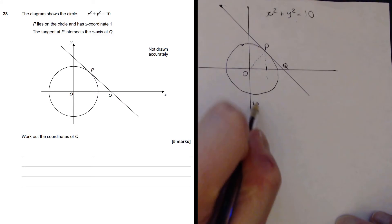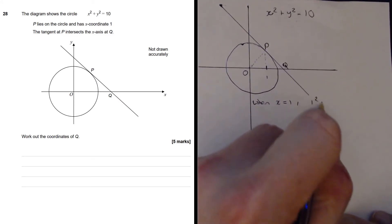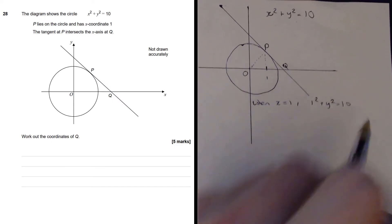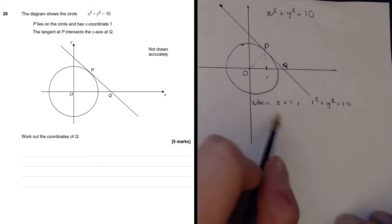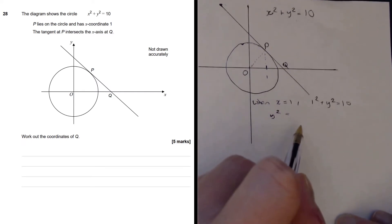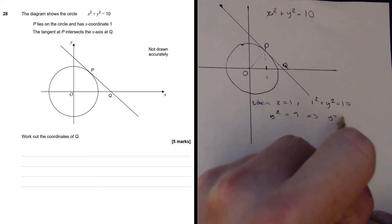So we know that when x equals 1, 1 squared plus y squared equals 10, and that's at the point P. So let's rearrange that. We are going to get that y squared equals 10 minus 1 squared, which is 9. This tells us that y equals 3.